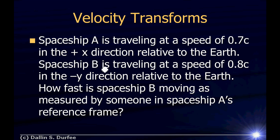Problem number two: Spaceship A is traveling at a speed of 0.7C in the plus X direction relative to the Earth. Spaceship B is traveling at a speed of 0.8C in the negative Y direction relative to the Earth. How fast is spaceship B moving as measured by someone in spaceship A's reference frame? Now we have two components of velocity.